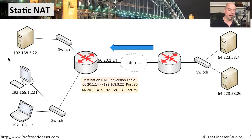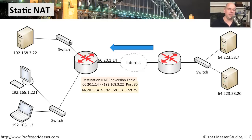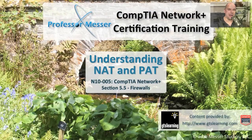End users don't see those internal IP addresses — they have no idea NATing is taking place and think they're communicating directly to 66.20.1.14. The same thing happens for email: packets arrive inbound to the same public IP address, but the NAT configuration says if it's port 25 traffic, don't send it to the web server — that's mail traffic — so it translates the address to 192.168.1.3. We always create these inbound NAT rules to allow traffic into the DMZ and back out again.